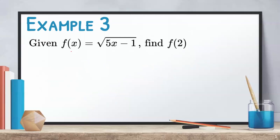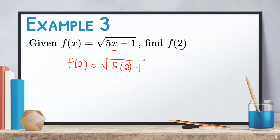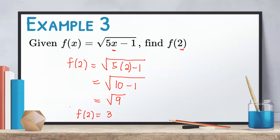For the third example, given f of x is equal to square root of 5x minus 1, find f of 2. Since we need to solve for f of 2, we substitute 2 to the x of the given function. That will give us f of 2 is equal to the square root of 5 times 2 minus 1. Multiply first 5 and 2, which will become 10. So we will have square root of 10 minus 1. Simplifying 10 minus 1 gives us 9, so it will become square root of 9. Remember that square root of 9 is equal to 3. Therefore, f of 2 equals 3.